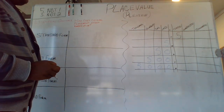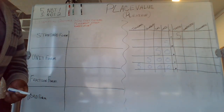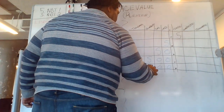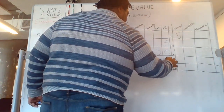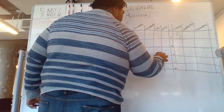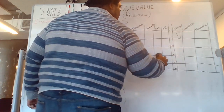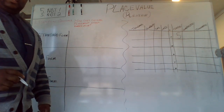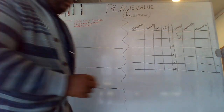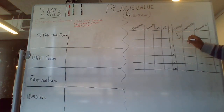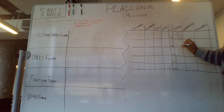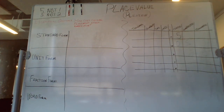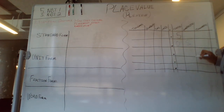What would happen if I divided the numbers by ten instead? Let's see. We started with five tenths. What's five tenths divided by ten? It would be five hundredths. What's five hundredths divided by ten? If you said five thousandths, you're correct.